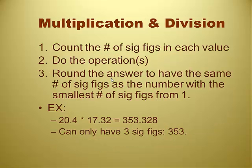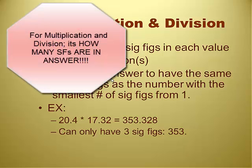Multiplication and division for significant figures. You count the number of significant figures in each value of your problem. Do the operation. Round the answer to have the same number of sig figs as the number with the smallest number of sig figs in the problem. Okay, so it's number of. Multiplication and division is number of sig figs, yeah?